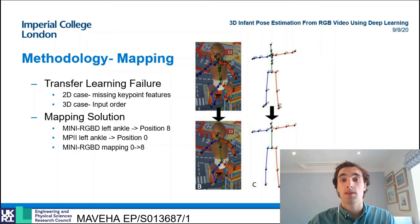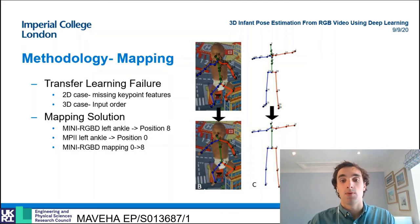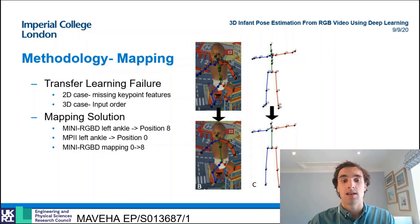The solution developed by this project is to map all the key point frameworks to one common definition. This is taken to be the dataset with the fewest key points — in this case the MPII dataset. For example, the left ankle key point is at position 8 in the mini RGBD dataset but at position 0 in the MPII dataset.